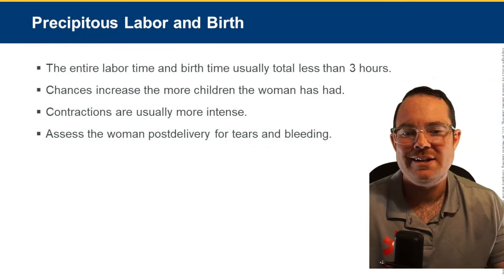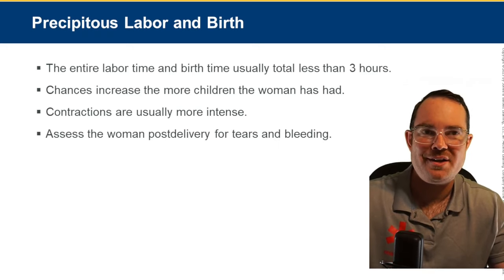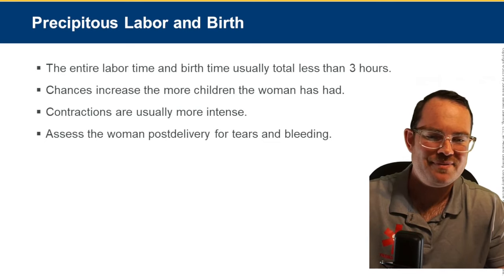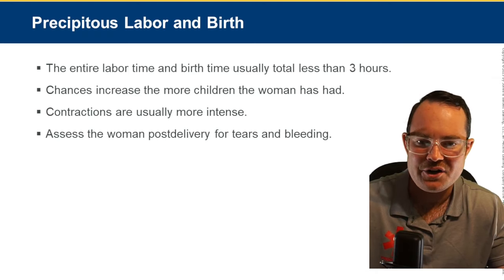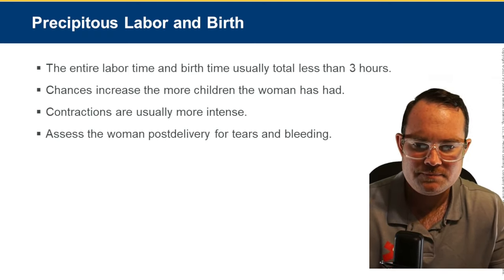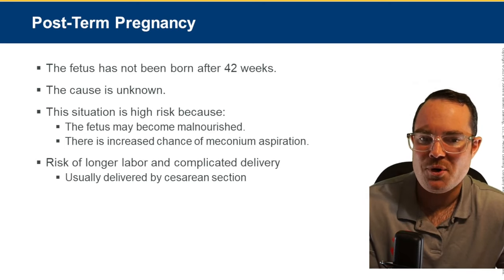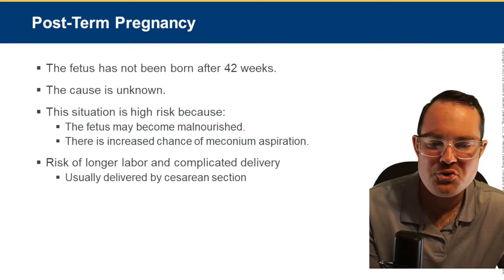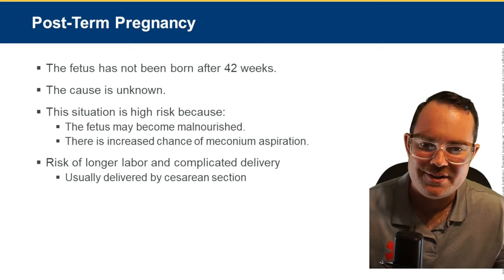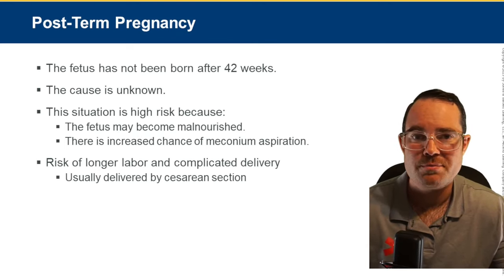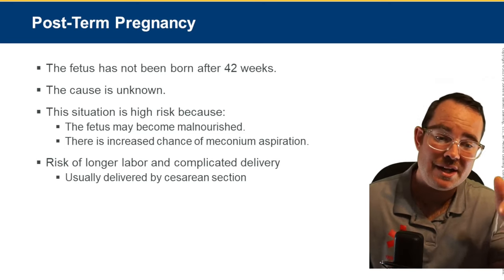Precipitous labor is when the entire labor is less than three hours — most common in patients with multiple prior deliveries. Post-term pregnancy is when the fetus has not been born after 42 weeks. The problem is that the baby keeps growing larger each week, making delivery more difficult. Normal delivery is expected around 40 weeks; anything beyond 42 weeks is considered post-term.